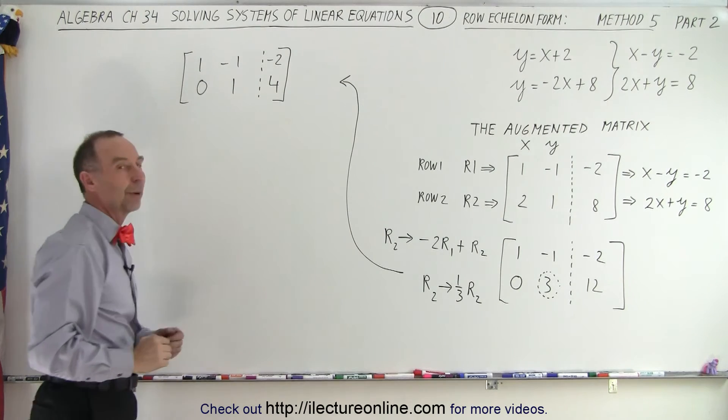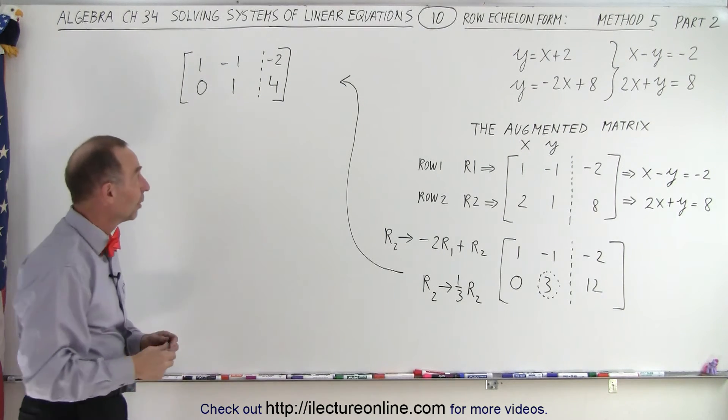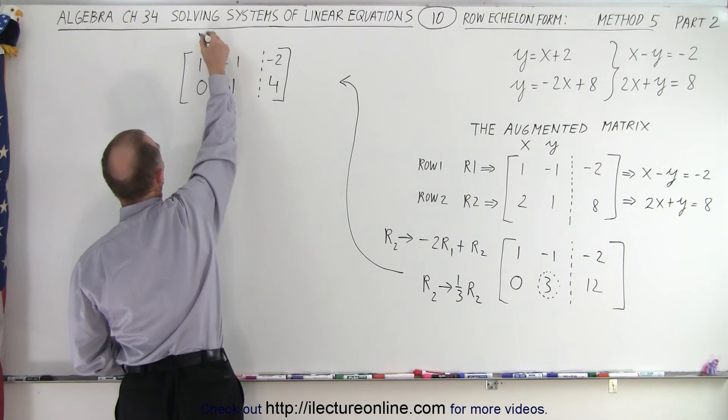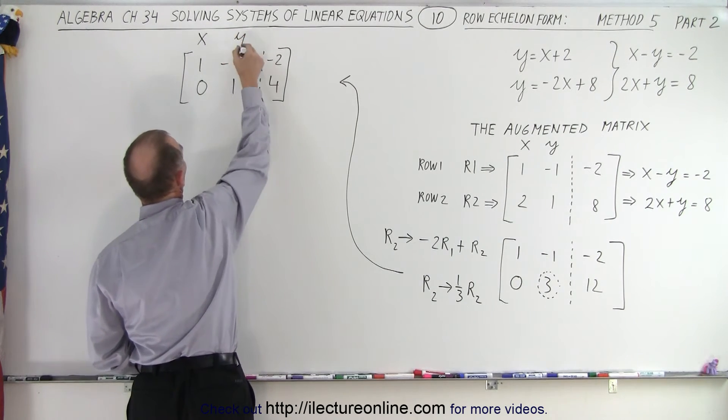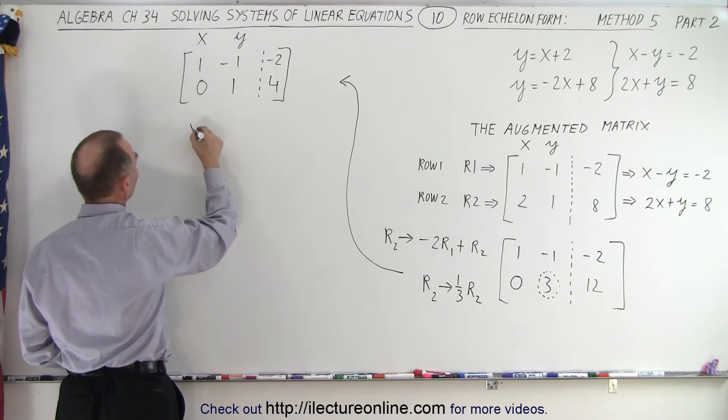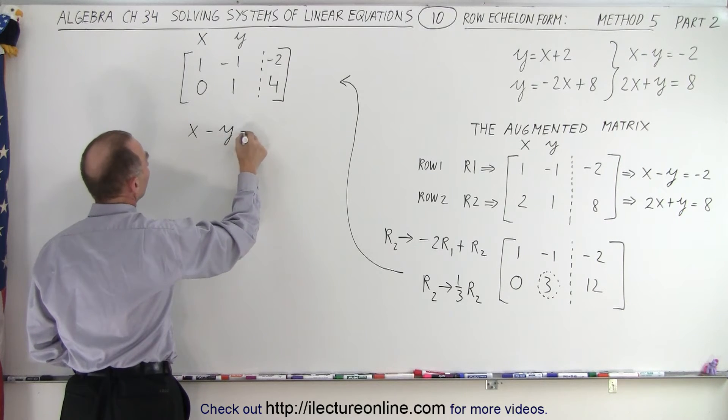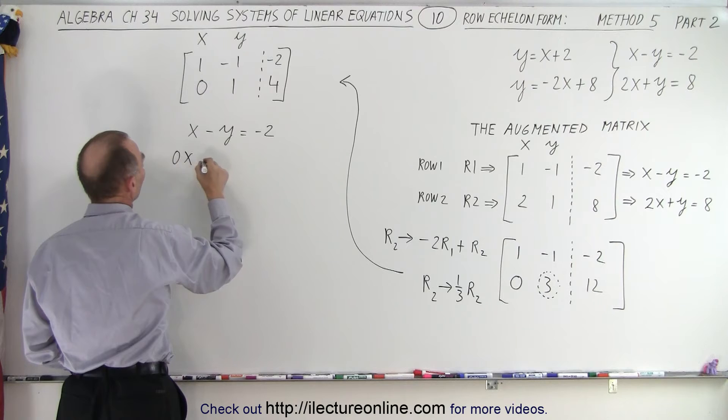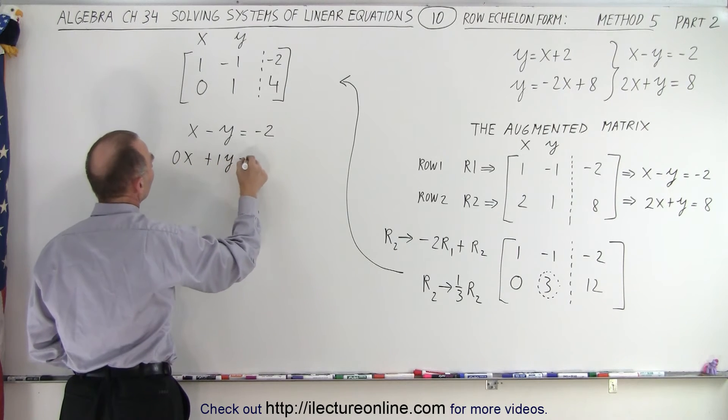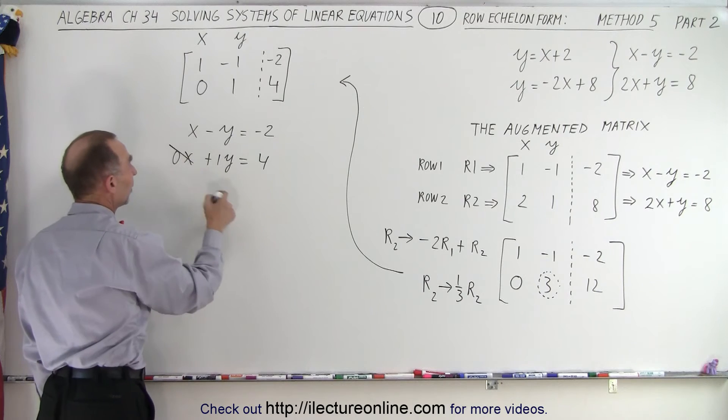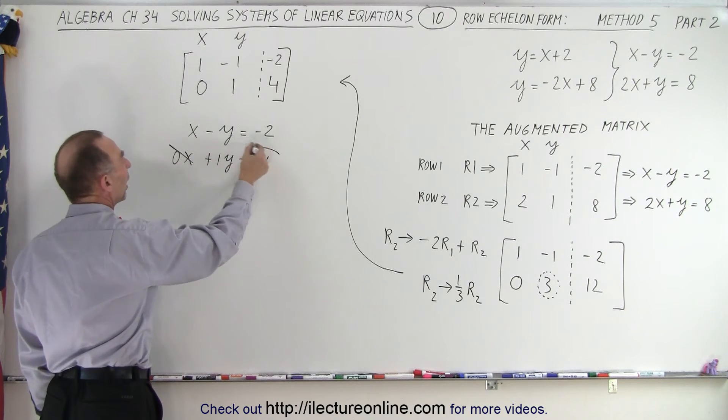So now I have this in the proper format. I have ones across the diagonal and on the bottom left corner I have a 0. Notice that this is the column of all the x's, this is the column of all the y's. So the new equations are x - y = -2 and here I get 0x + 1y = 4. Of course 0x is simply 0, so I get y = 4.